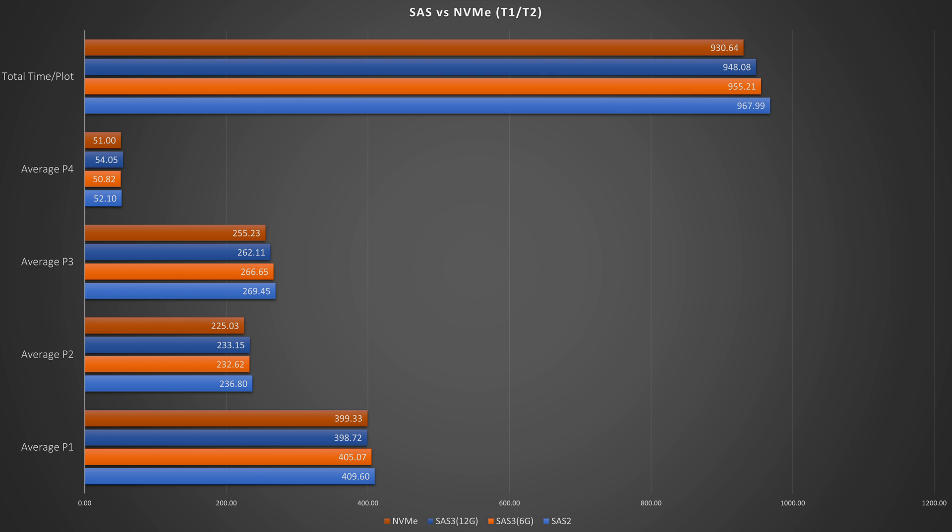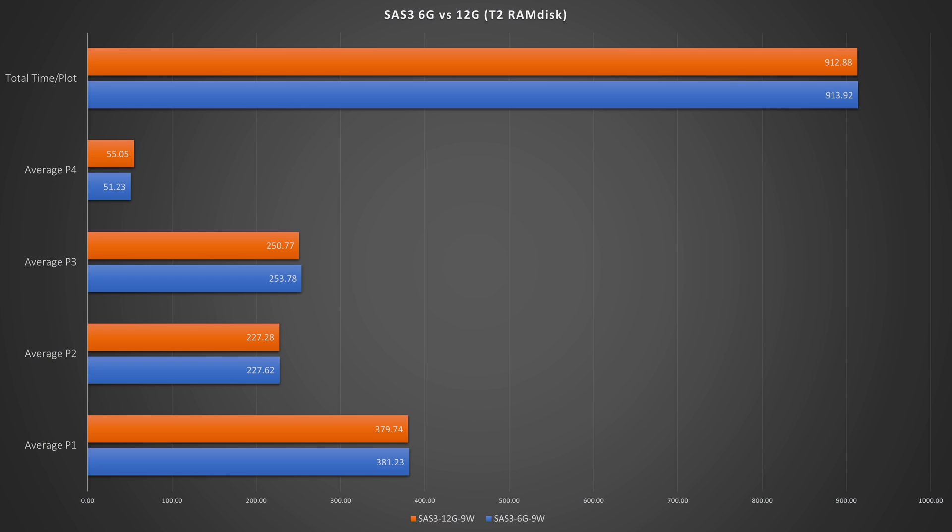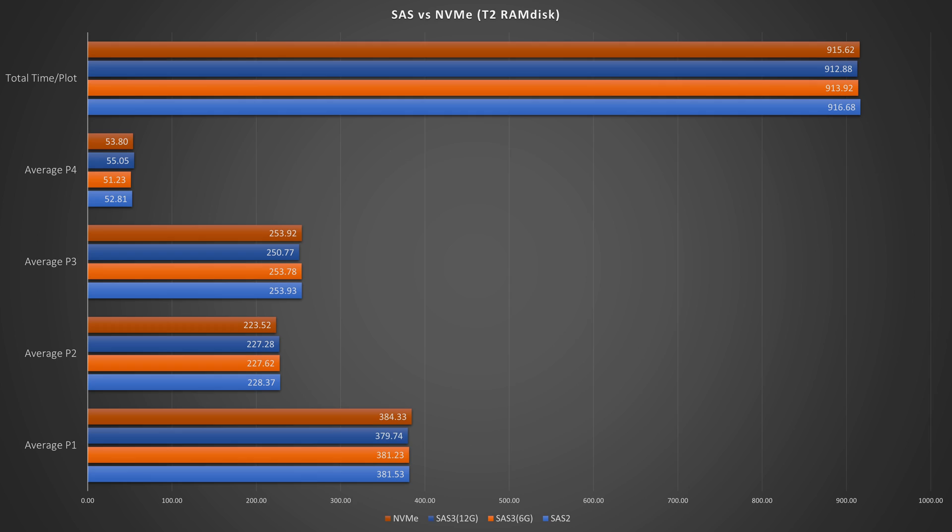The new result pushed us closer to the NVMe and farther away from the SAS 2 — it's pretty much in the middle now. With the RAM disk, we've basically shaved off one second. So the difference between the best and the worst here is four seconds per plot.